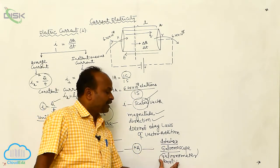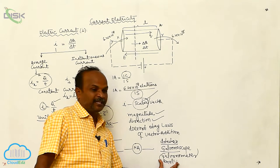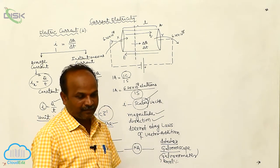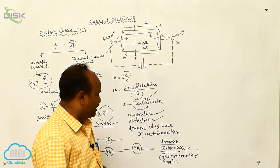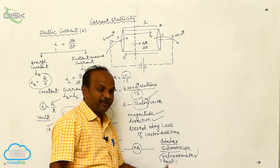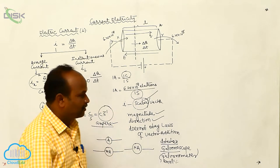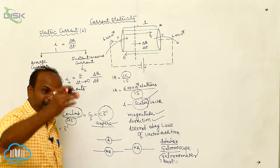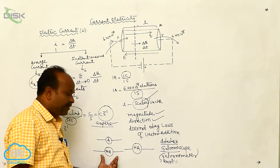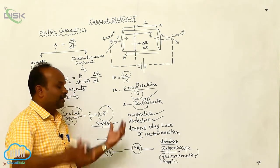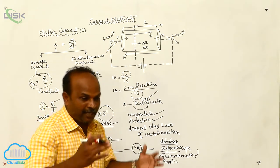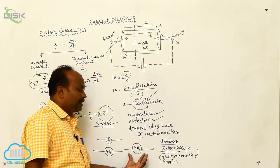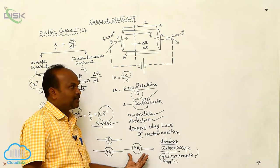Small amounts of current can be measured by the galvanometer, whether the electric current is present or not can be detected by the galvanoscope. The current in amperes can be measured by the ammeter, current in milliamperes can be measured by the milli-ammeter, and the microamperes of current can be measured by micro-ammeters.